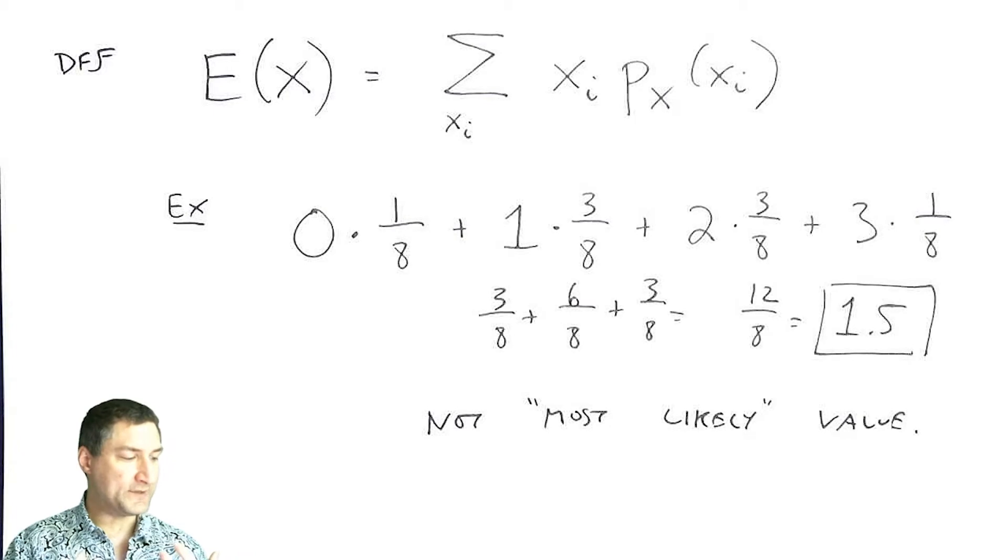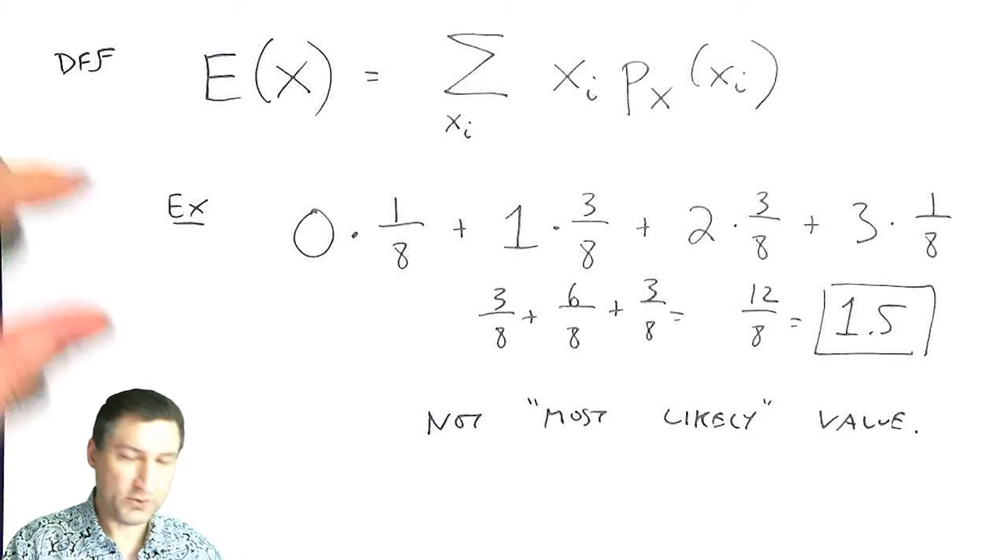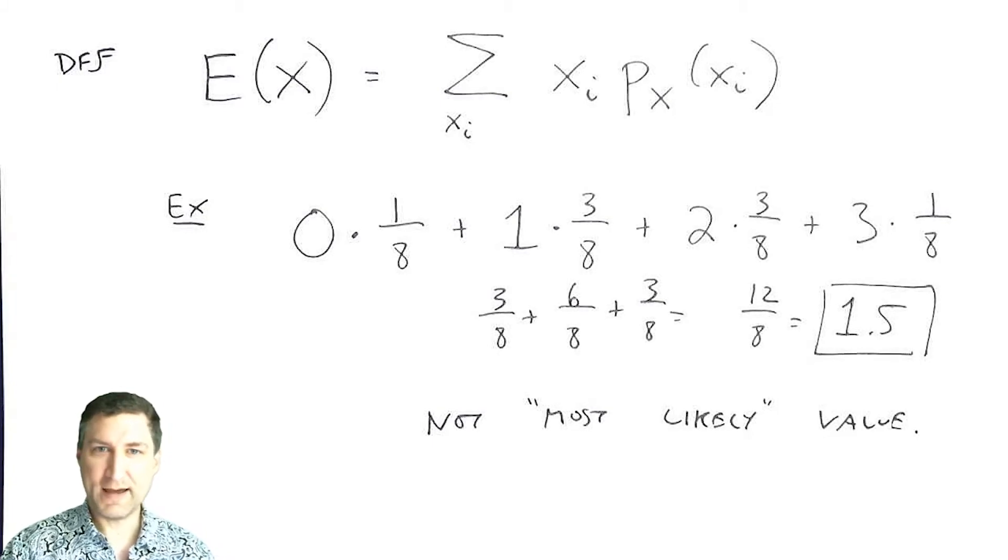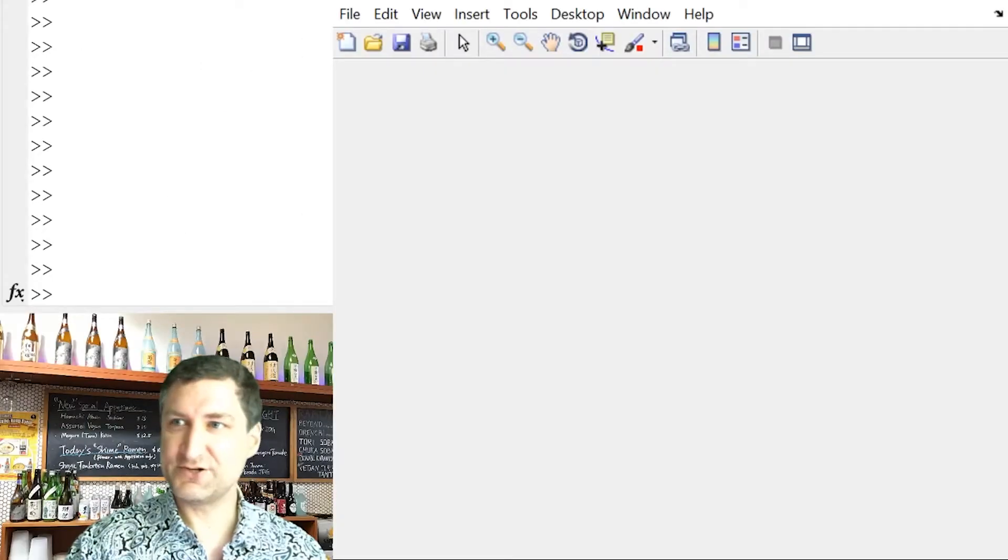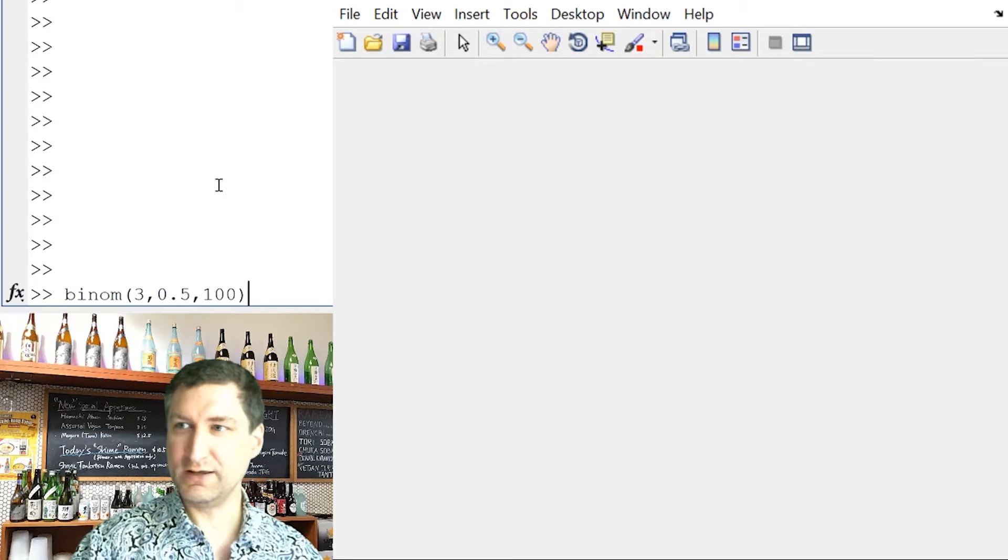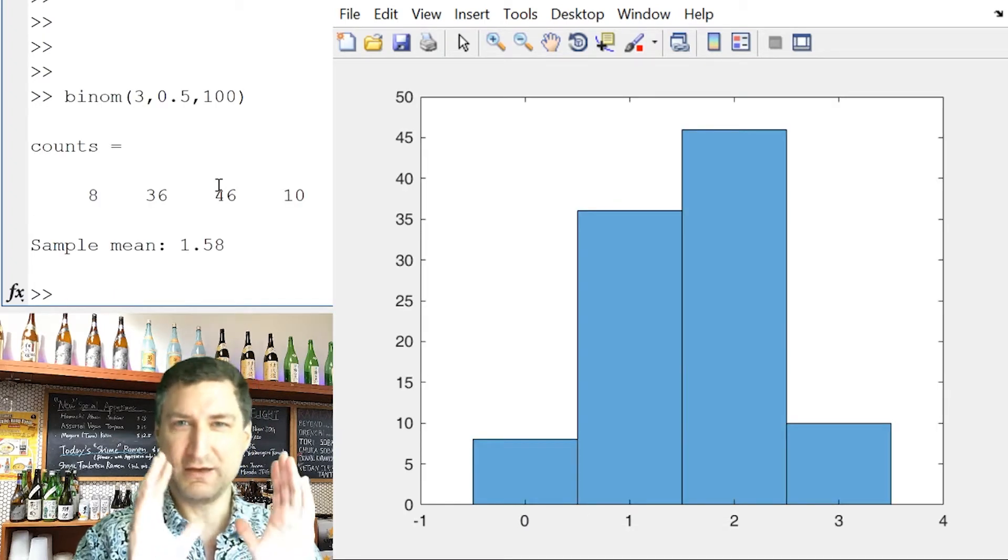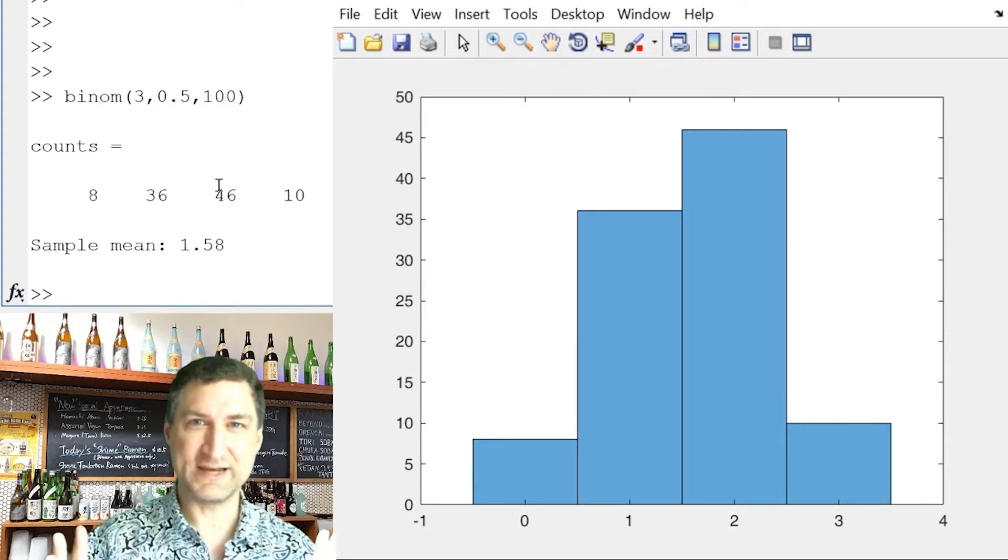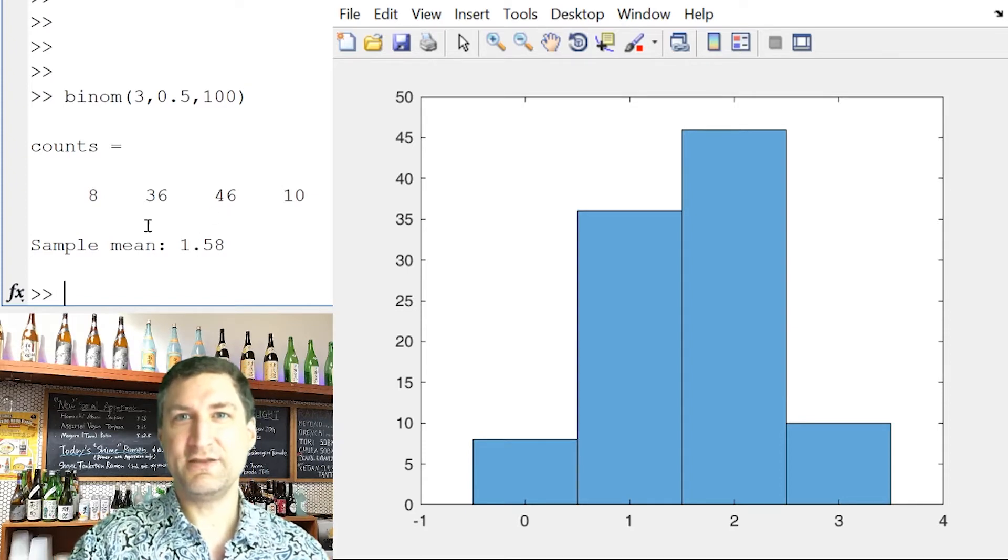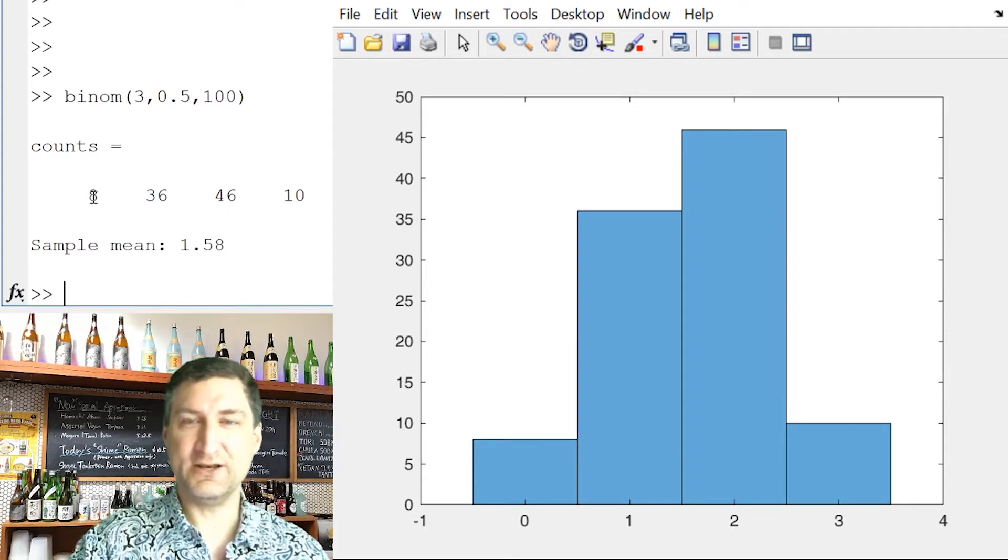It's basically the limit of what's called the sample mean. And so let's look at this example again in MATLAB. So remember that a couple lectures ago, I had this situation where I was flipping a coin, say I flipped that coin 100 times, I flipped the coin three times, I do 100 trials of that experiment. And here, these are the counts I get. So eight times I got no heads, 36 times I got one head, and so on.